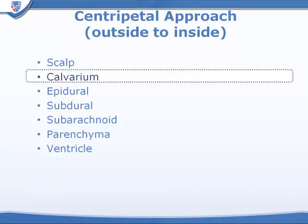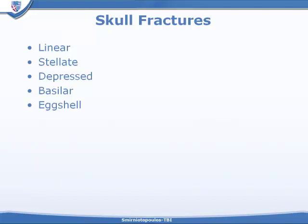Looking very briefly at the skull: skull fractures have been classified as being linear, stellate, depressed, basilar, or eggshell fractures. Eggshell fractures are usually not seen in living patients — this is similar to the appearance of a hard-boiled egg that has been smashed, with the bone fragments held together by the membranes.